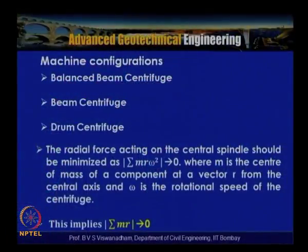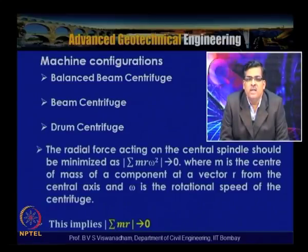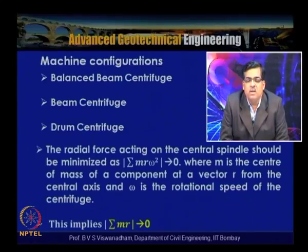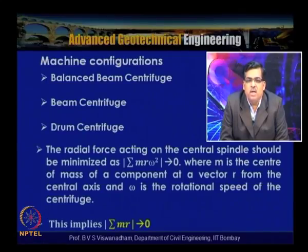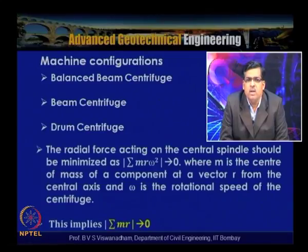After discussing limitations, we introduce two types of machine configurations: beam centrifuges and drum centrifuges. Beam centrifuges are also known as balanced beam centrifuges. In drum centrifuges, there is a peripheral drum and a central tool table. The radial force acting on the central spindle should be minimized so that Σmrω² tends to 0, meaning mass balance is achieved on both sides. We must ensure Σmr = 0 so the model can be rotated in the plane of rotation without affecting the centrifuge bearings.